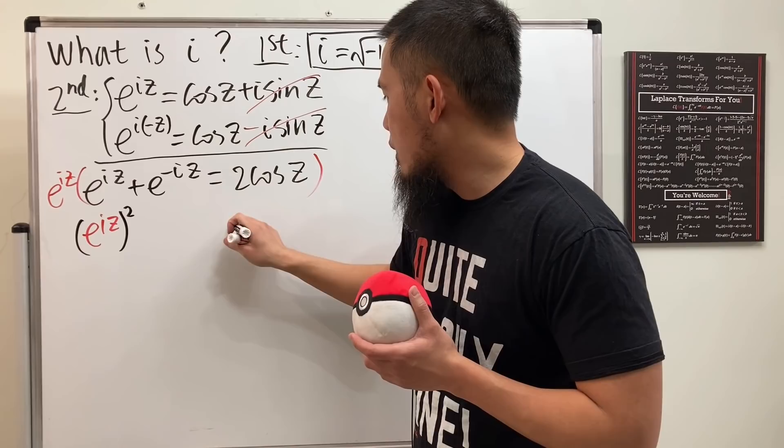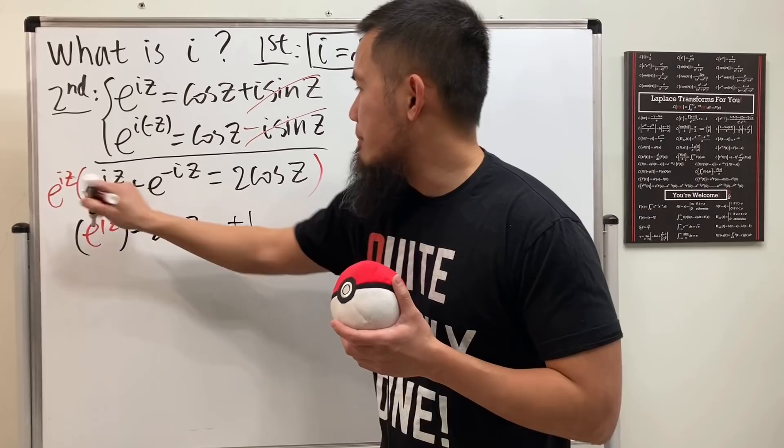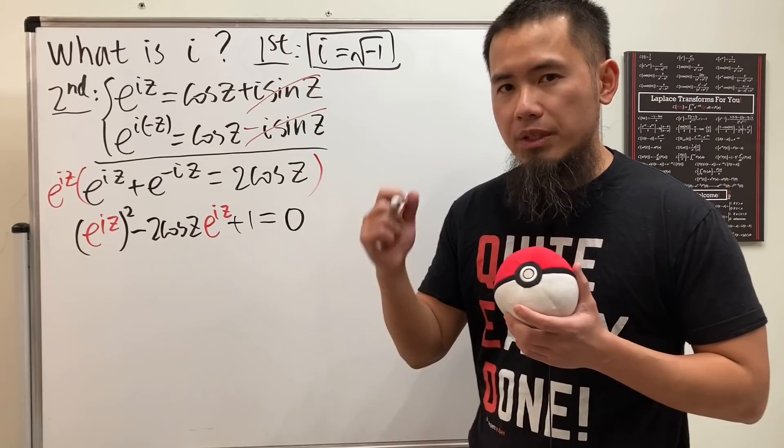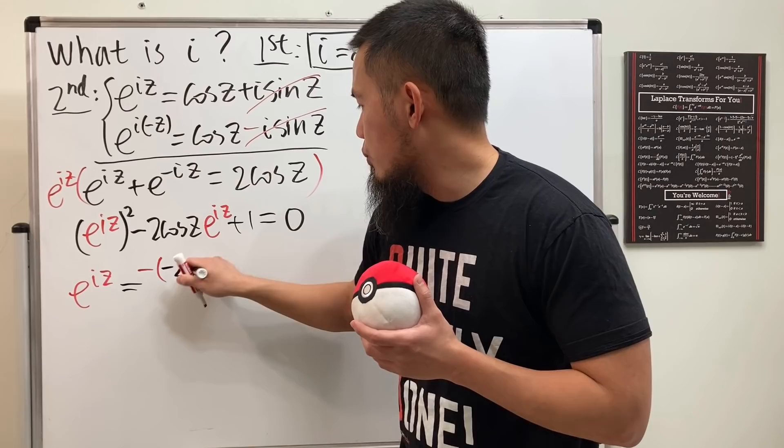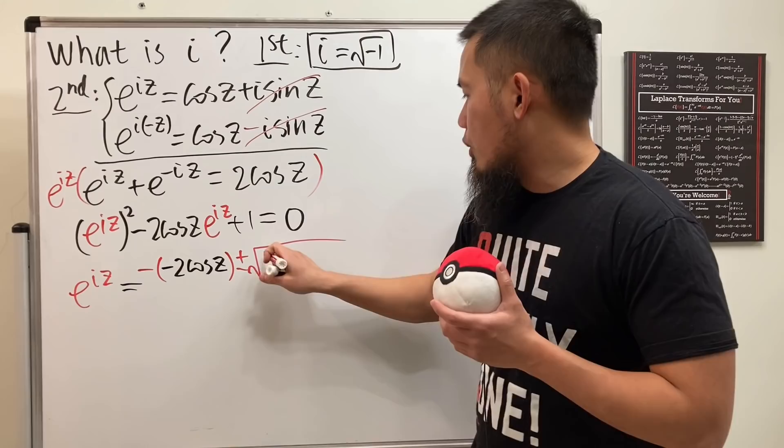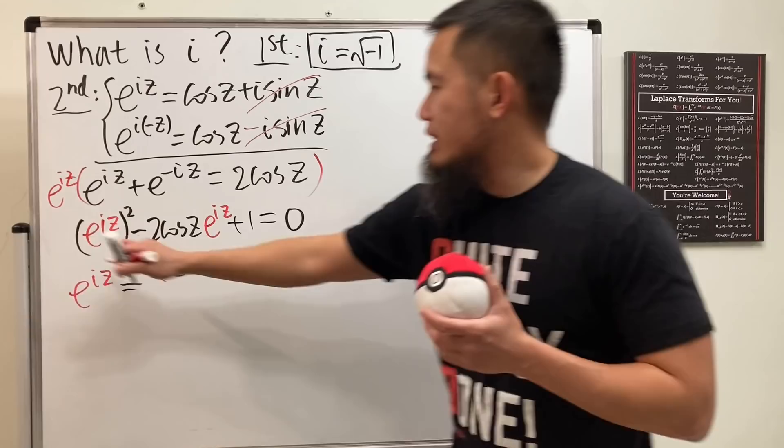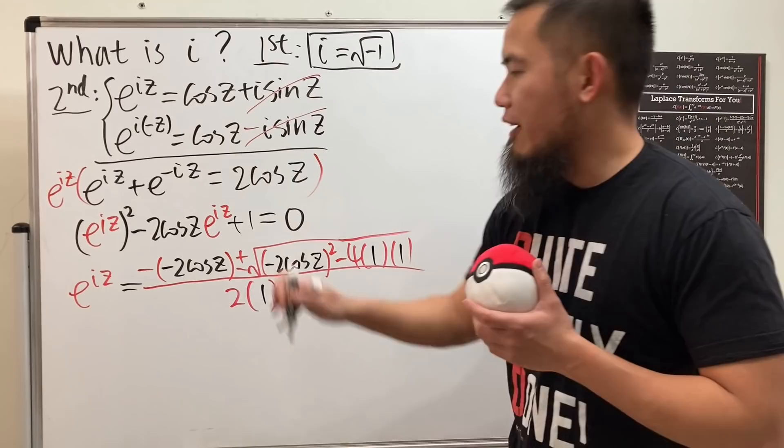So I'm actually going to put it down right here. Because this times this, well, I'm actually going to bring that to the other side. So we actually get a negative and we have two cosine z times that, which is the e to the iz right here. And everybody will be equal to zero right here. Well, you can see that this right here is actually a quadratic equation in terms of e to the iz. So we know by the quadratic formula, e to the iz will be equal to negative b, which is going to be negative of this, which is negative two cosine z. And then we are going to plus or minus square root of